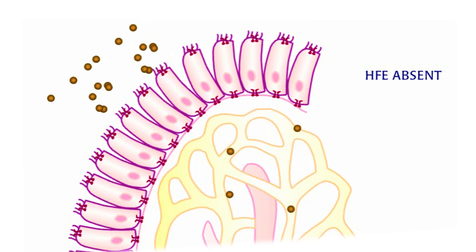In hemochromatosis, HFE protein is absent and the sensory ability of cells in the intestine fails. The villi cells are tricked into sensing an iron deficit. Twice as much iron is transported into the bloodstream.